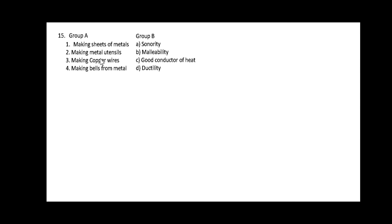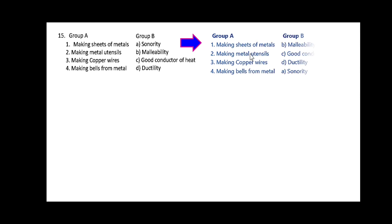Next in group A: making sheets of metals, making metal utensils, making copper wires, and making belts from metal are given. In group B these are matched as follows: making sheets of metals — malleability; making metal utensils — good conductor of heat; making copper wires — ductility; and making belts from metals — sonority.